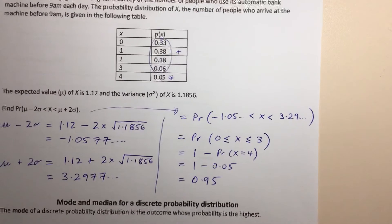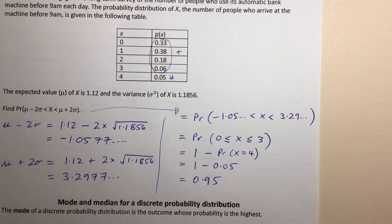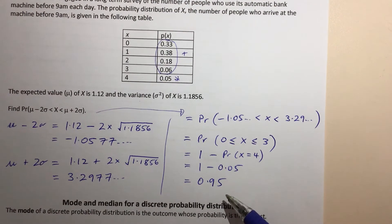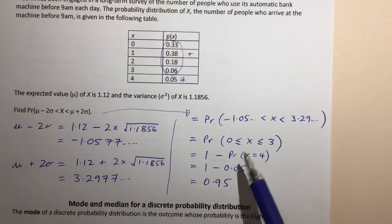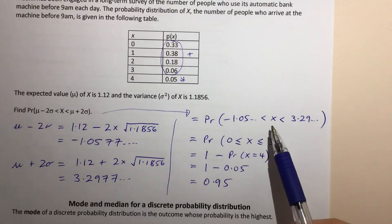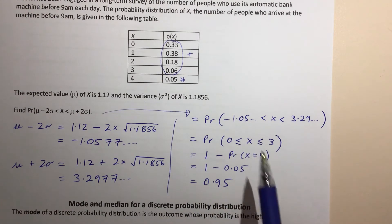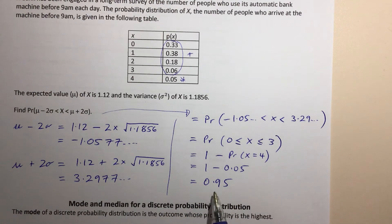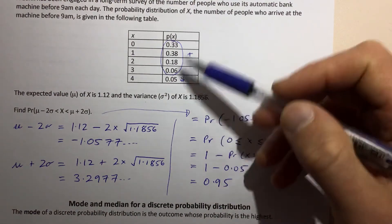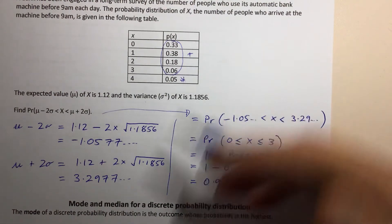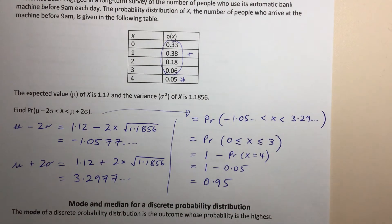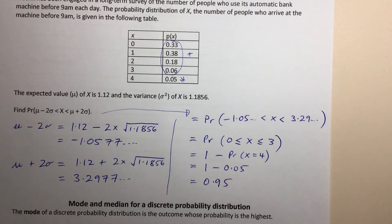I said before it's an approximation. In this question, it's actually worked out to be very precise — the probability that X is within two standard deviations of the mean has turned out to be exactly 0.95. That's because this is a made-up example. In reality, it won't always equal 0.95, but the idea is that it'll usually be pretty close.